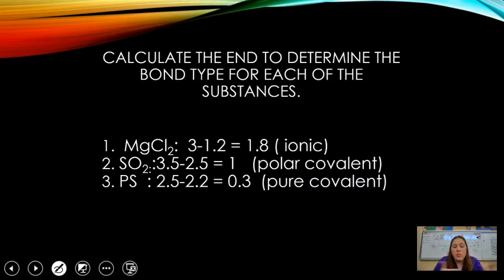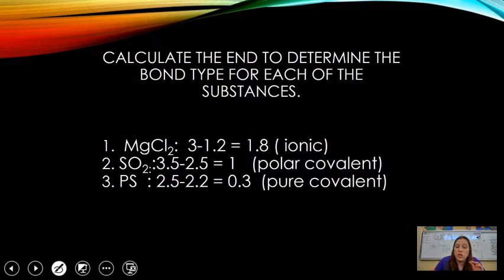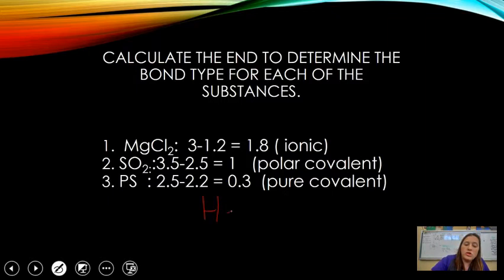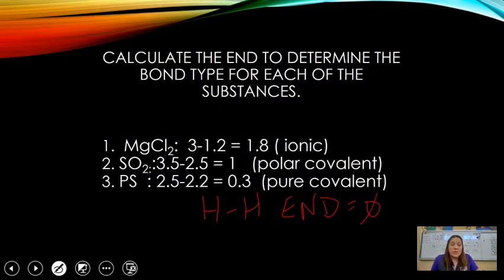Some other examples: magnesium chloride — chlorine is 3.0, magnesium is 1.2, difference is 1.8 — that's definitely an ionic bond. For sulfur dioxide: oxygen is 3.5, sulfur is 2.5, difference of 1.0 — that's a polar covalent bond. Phosphorus and sulfur: 2.5 minus 2.2 gives a difference of 0.3 — that's a more pure covalent bond. And for true diatomic molecules like H2, the electronegativity difference is zero — a pure non-polar covalent bond.